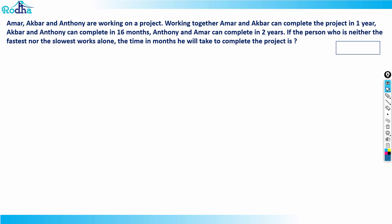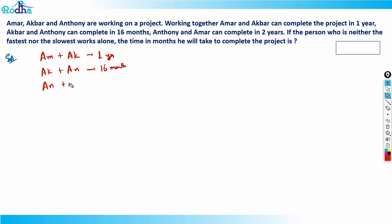Hi guys, let's look at this next question from Time and Work. This question is from CAT 2021 Slot 1. It says Amar, Akbar, and Anthony are working on a project. Working together, Amar and Akbar can complete the project in one year. Akbar and Anthony can complete it in 16 months, and Anthony and Amar can complete it in two years.